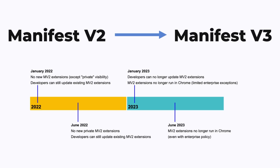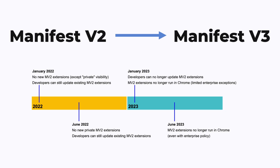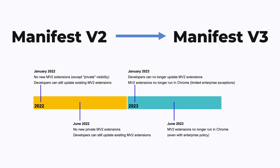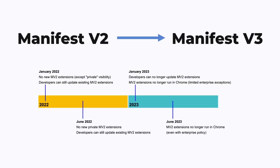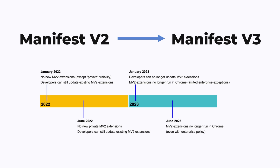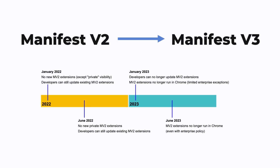Just a quick note: I will be assuming manifest v3 or MV3 for the rest of this video. There is an older permission system called manifest v2 or MV2, which is somewhat simpler than the current system. However, it is in the process of being deprecated, so I will not be talking about it further in this video.